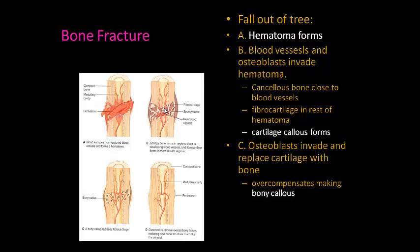Then osteoblasts replace that cartilage callus with what's called a bony callus, which may start out as spongy bone. You'll notice a little bulge — this may be when you get the cast off. It's a myth that your bone is stronger where it was fractured. When you get your cast off it may be somewhat stronger, but in the long run we don't want one part stronger, because that makes the rest of the bone weaker.